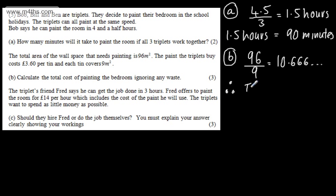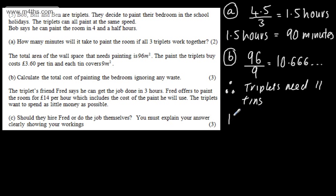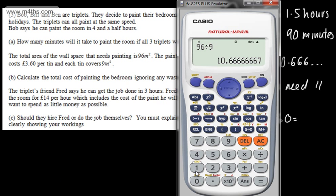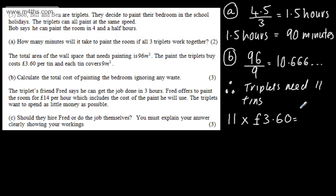We can say the triplets need 11 tins. We're now going to do 11 times £3.60. You can do this in your head or put it through the calculator. Remember, on calculator questions you still need to show workings, but it's perfectly fine to input 11 times 3.60. That gives us £39.60.